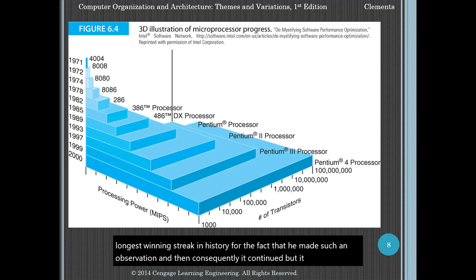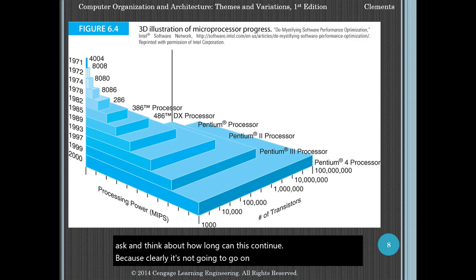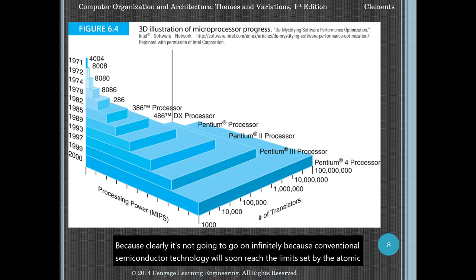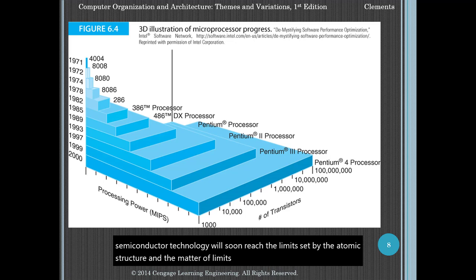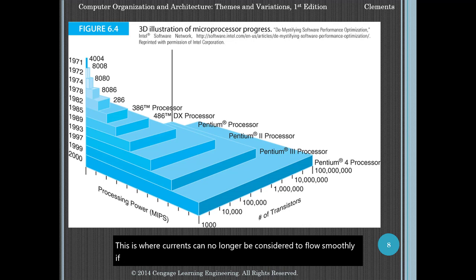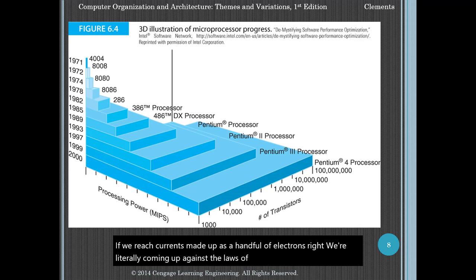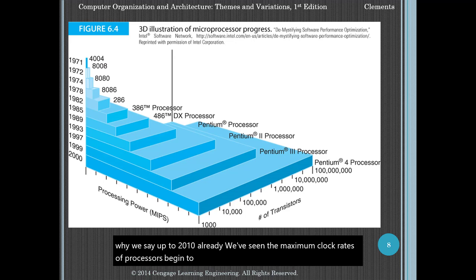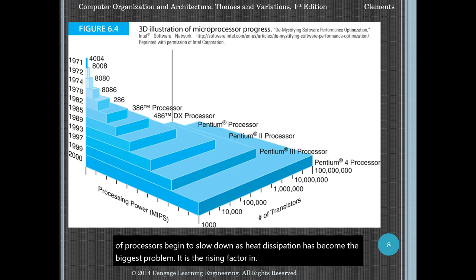It is natural to ask how long this can continue, because clearly it's not going to go on infinitely. Conventional semiconductor technology will soon reach the limits set by the atomic structure and the limits set by quantum mechanics. This is where currents can no longer be considered to flow smoothly if we reach currents made up of just a handful of electrons — we're literally coming up against the laws of physics. Already, we've seen the maximum clock rates of processors begin to slow down as heat dissipation has become the biggest problem. It is no longer possible to cool chips adequately.